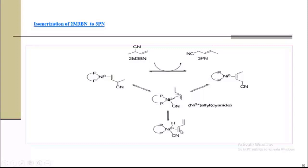We will get diene, or it may isomerize. We will get this product. So it is possible to change 2M3BN into 3PN, 3-pentenenitrile, basically.